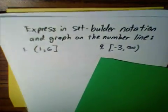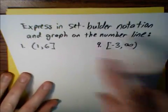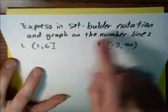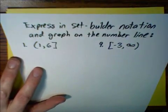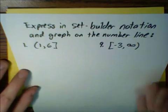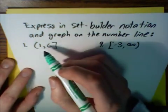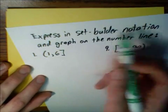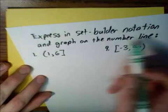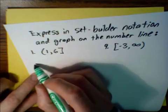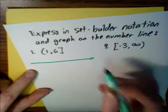So let's do some examples. Here's our first example and here's our interval. We're going to express this in set builder notation and graph it on the number line. It may be easier if we actually graph it first, so let's graph.